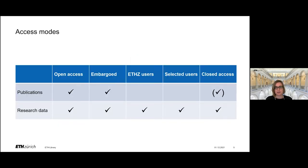The content in the research collection can have different access modes. Not everything that is published in the research collection is open access. There are also publications or data that are still under embargo. For research data, there are other access modes such as access for ETH members only or for selected users only. There are also some publications and data that are not available online, for example doctoral theses that cannot yet be made open access. This is just an example of a so-called closed access publication.